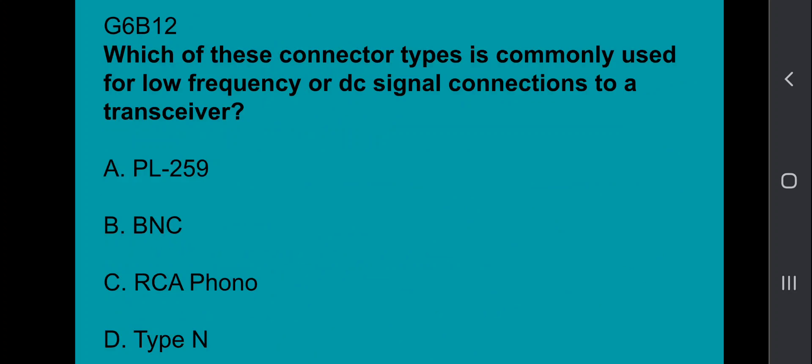G6B12: Which of these connector types is commonly used for low frequency or DC signal connections to a transceiver? It's going to be RCA Phono.